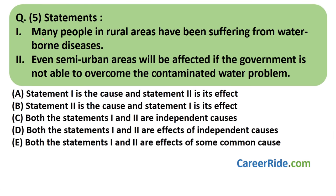Question number five. Statements: (1) Many people in rural areas have been suffering from waterborne diseases. (2) Even semi-urban areas will be affected if the government is not able to overcome the contaminated water problem. Neither combination makes sense using 'so/therefore', ruling out options A and B. Statement one is an effect — waterborne disease is the cause, and people suffering is the effect. Option C is ruled out.